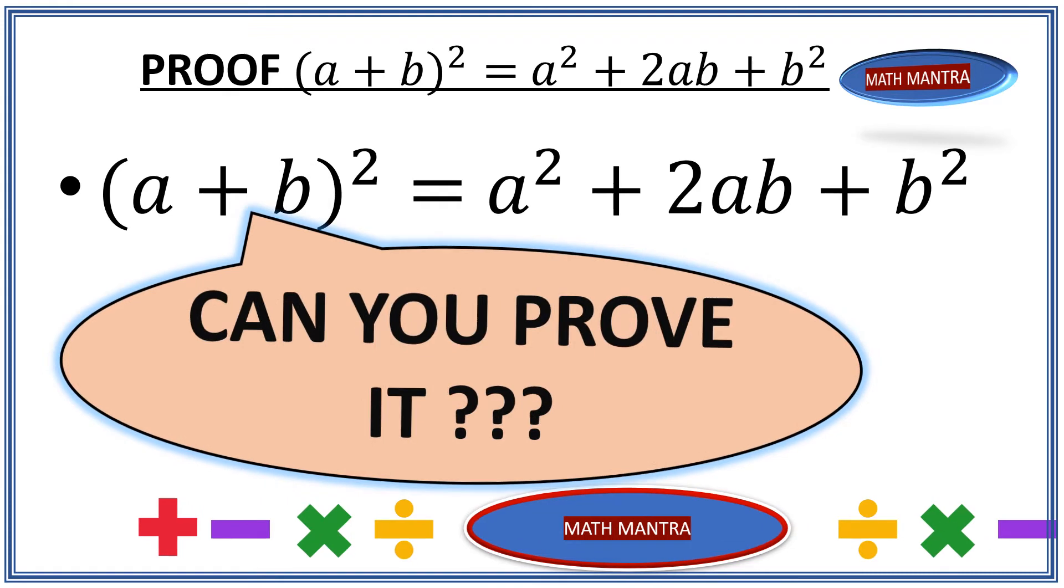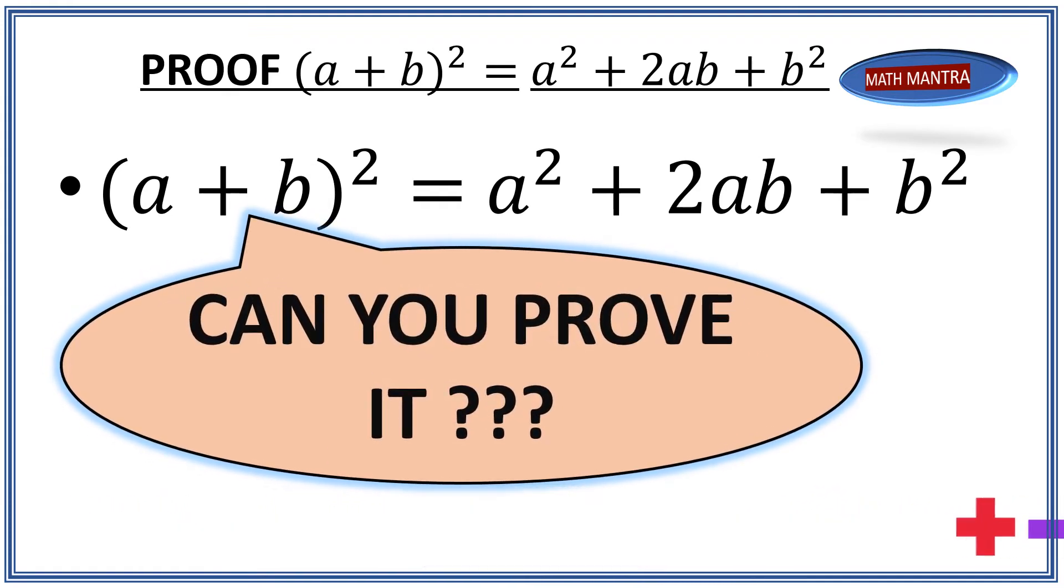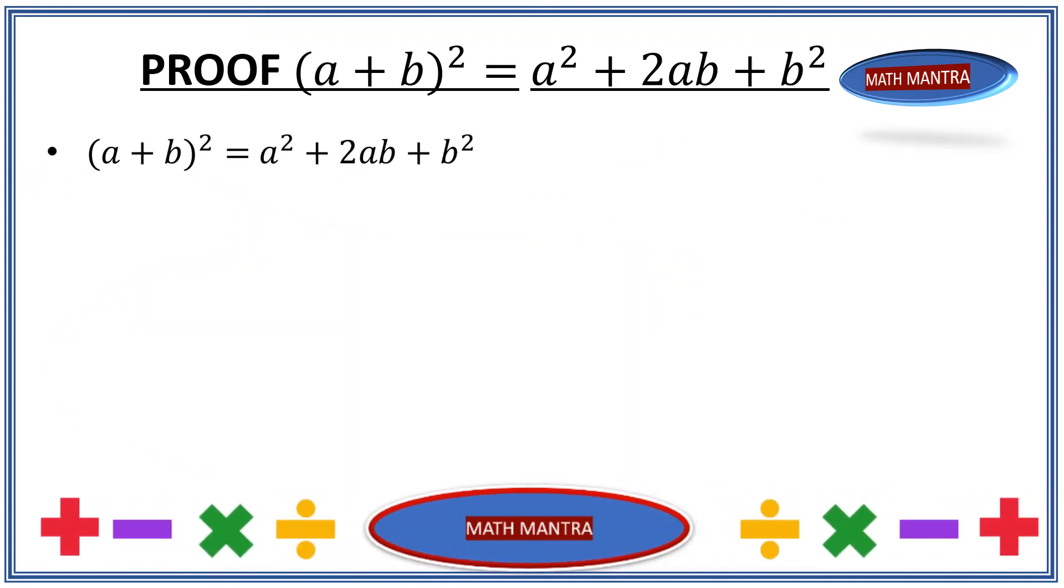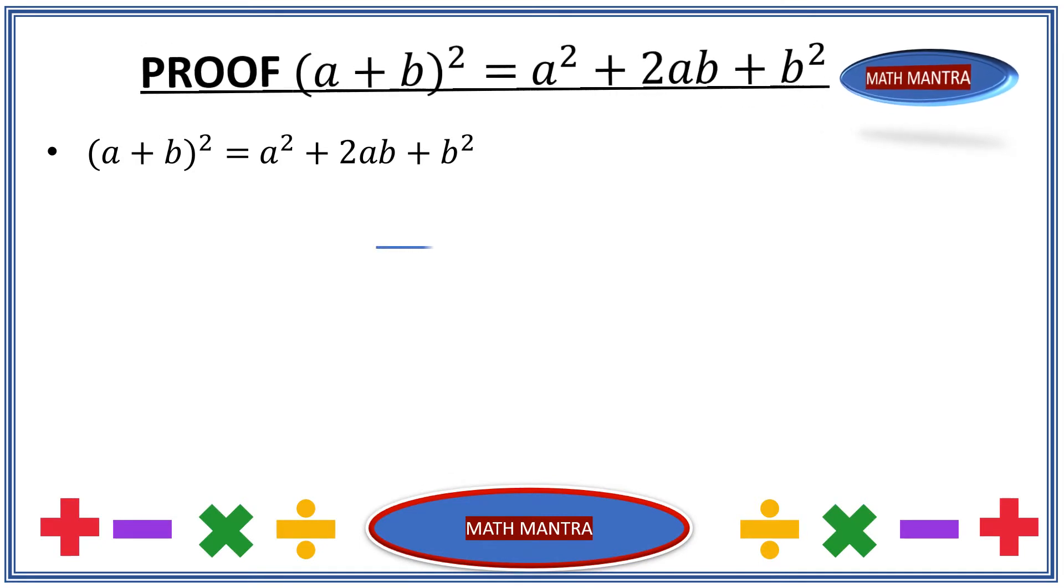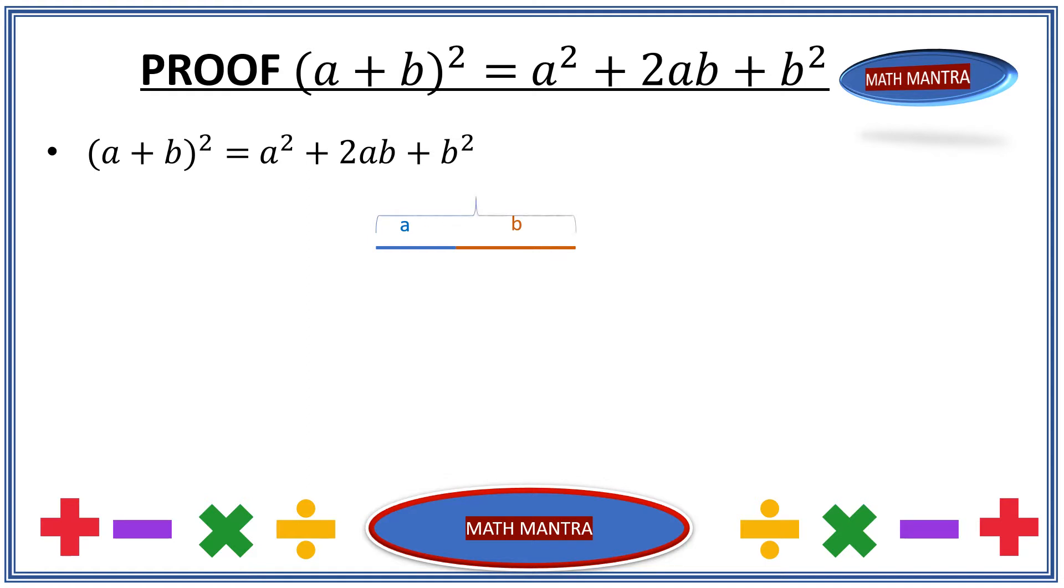So without further ado let's get started. In order to prove the equation for a and b, let's draw a random line a and let's draw another random line b. Let's put it right next to each other so the total length of this entire line essentially becomes a plus b.